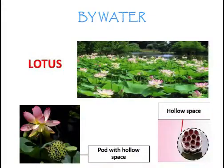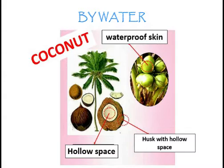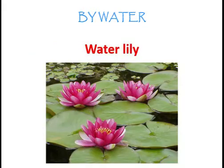Lotus fruits have hollow spaces that enable them to float on the water surface. Coconut husk has hollow spaces and waterproof skin that enables them to float and be drifted to other places. Water lily is also dispersed by water.